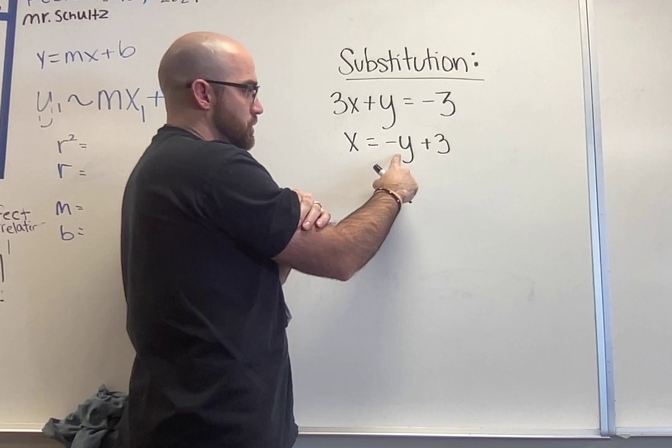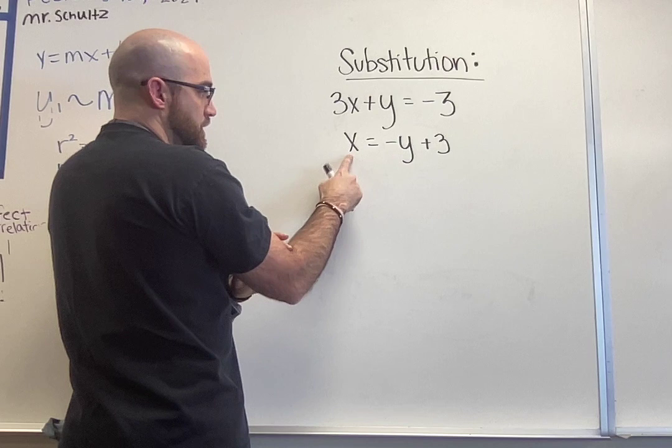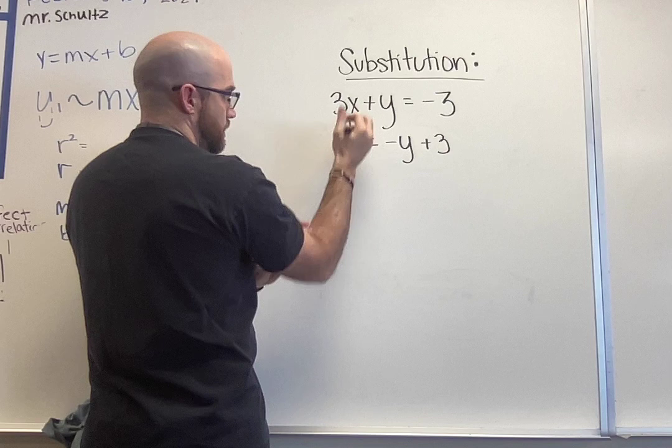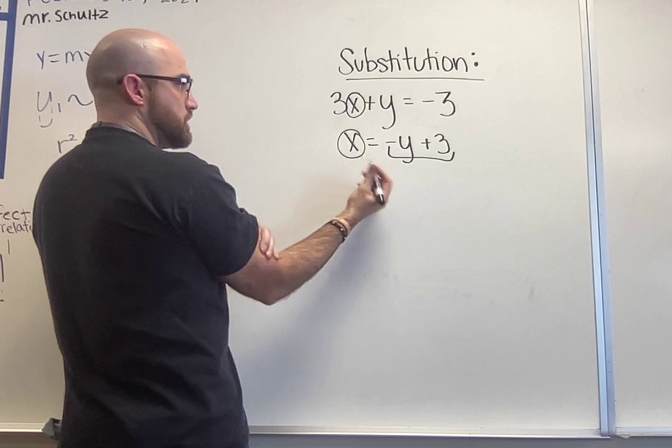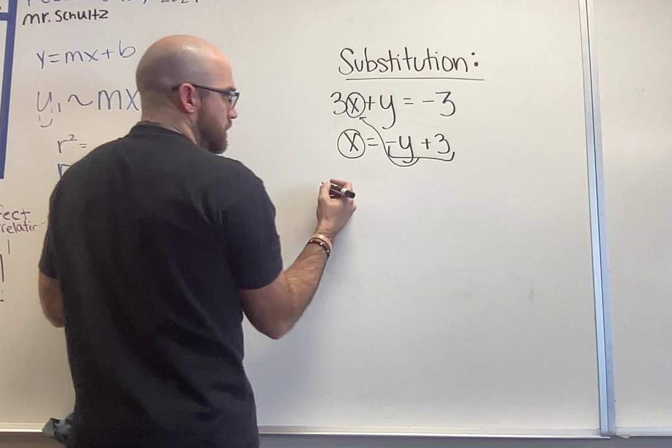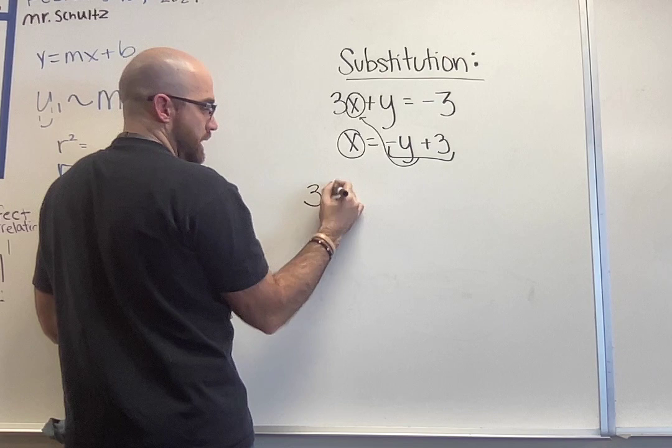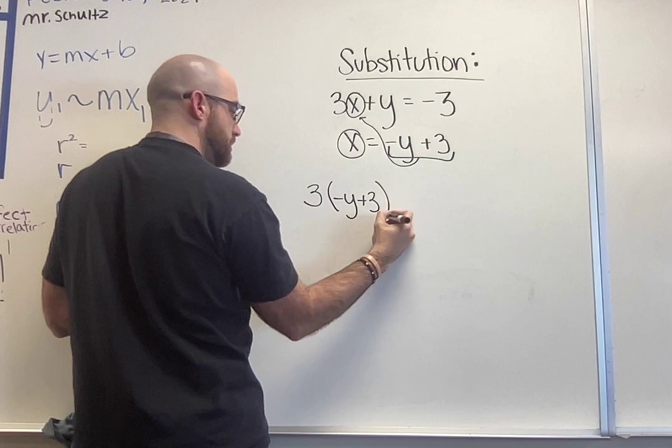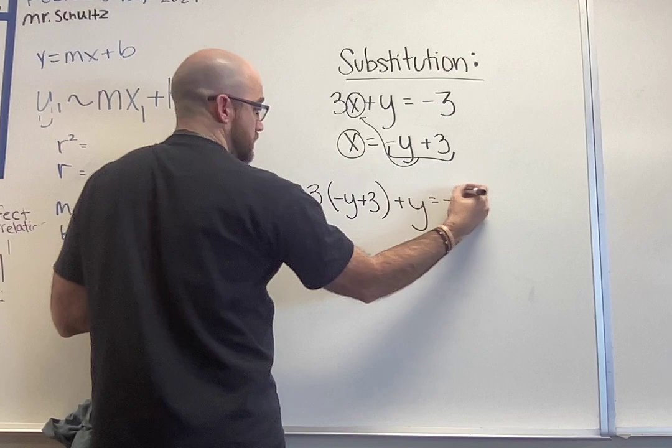So because x is by itself, this is what we're going to substitute into our other problem. I'm going to take this negative y plus 3 because we said it's equal to x and I'm going to plug it in or substitute it in for the x in our other problem. What that would look like is now I'll have 3 and instead of x I'm going to replace it with what x was equal to, negative y plus 3. The rest of the problem continues, plus y equals negative 3.